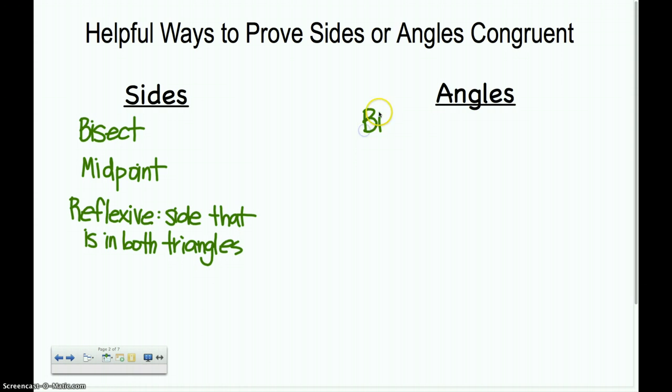For angles, we can bisect angles just like we can bisect a side. We can bisect angles and cut them in half. They will be cut in half by another side or a ray or a line. When they do that, those new two angles are congruent.